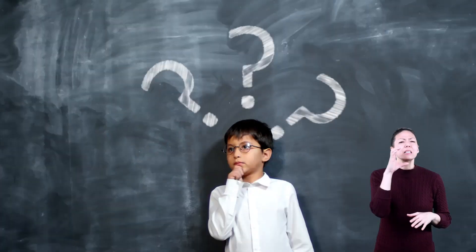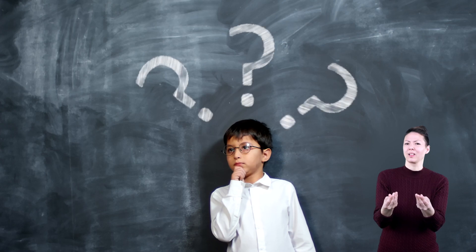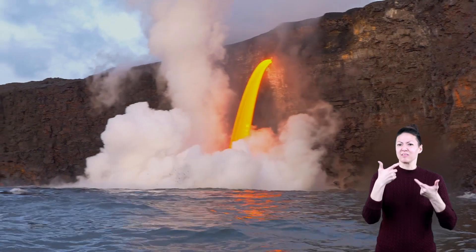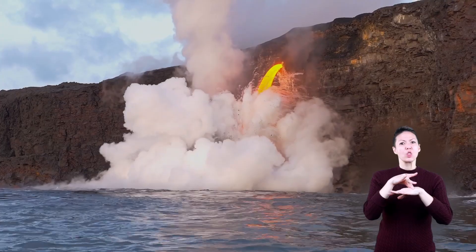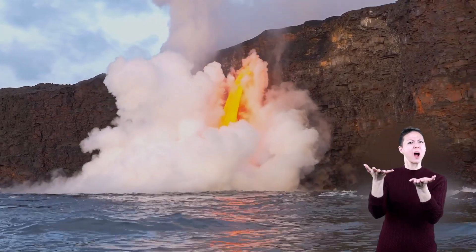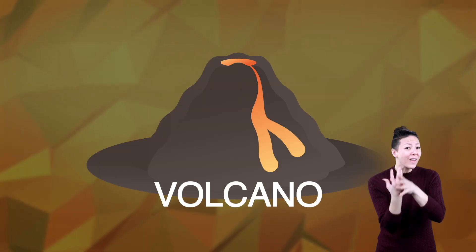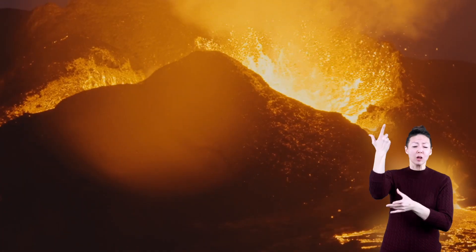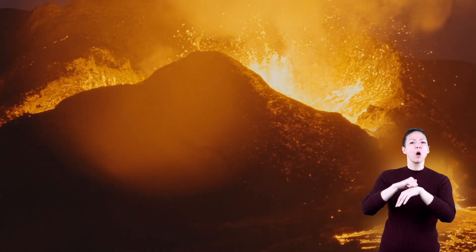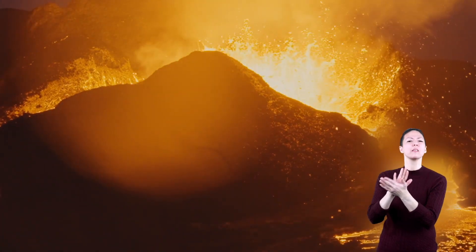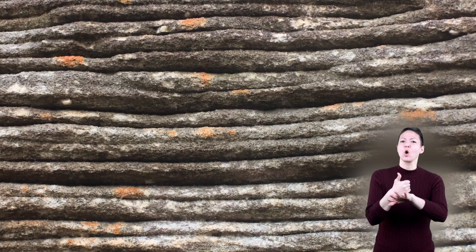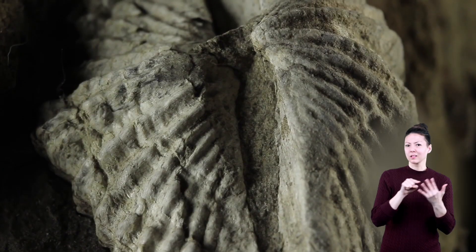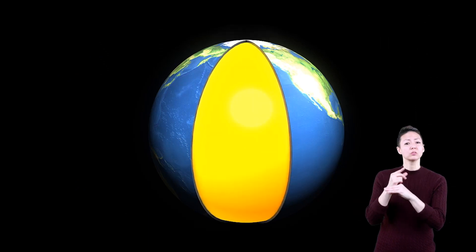Can you guess what the last material is? I'll give you a hint — it ejects from giant openings in the Earth's surface. If you said volcanoes, you're right. Volcanoes erupt melted rocks that slowly create all kinds of landforms, just like sediment, dirt, fossils, and the Earth's crust.